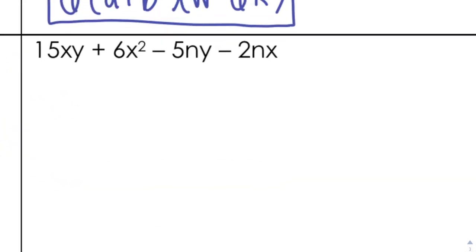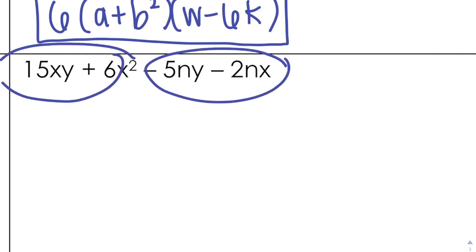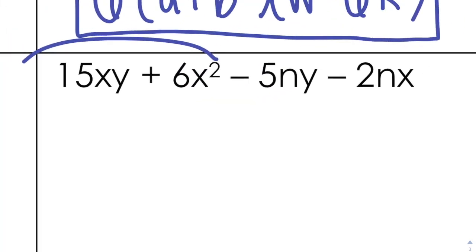Picking up on this next problem: it doesn't matter how crazy the variables get. As long as you have four terms and you see something in common in one pair and something in common in the other pair, you're good to go. Looking overall, there's nothing that all four terms have in common, so go ahead and split it up and look at the first half.